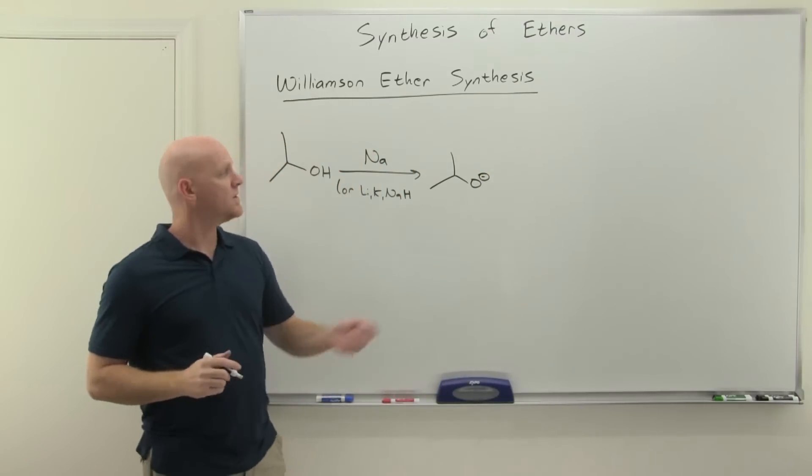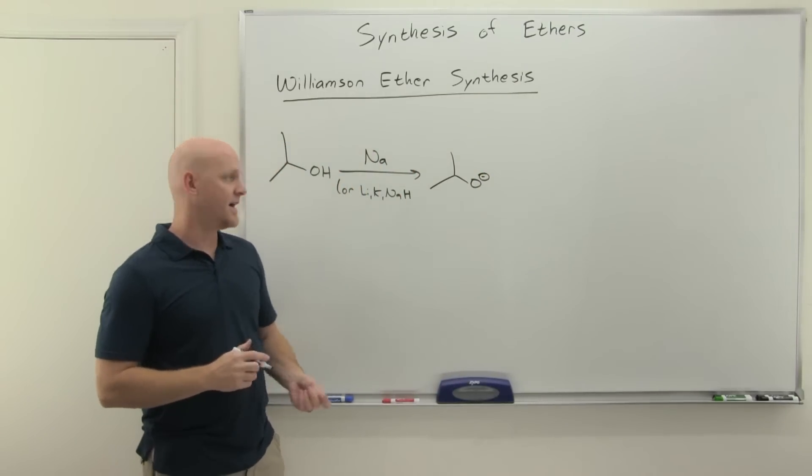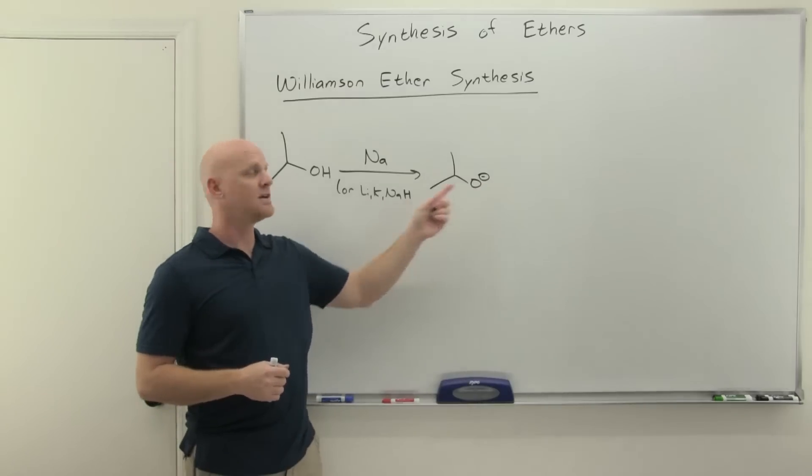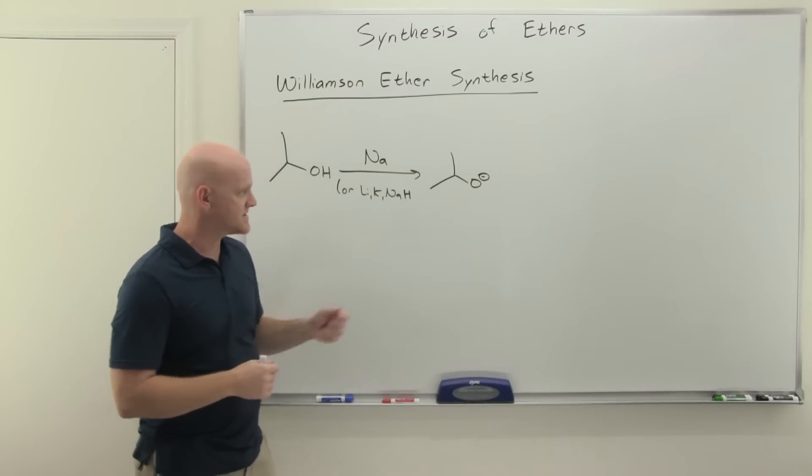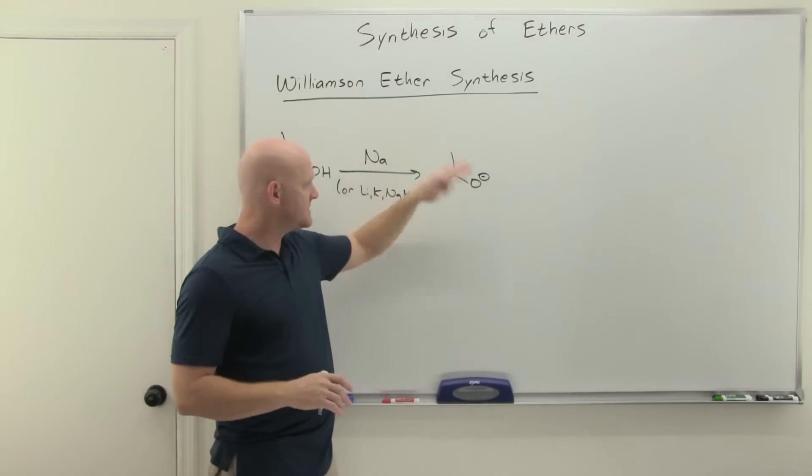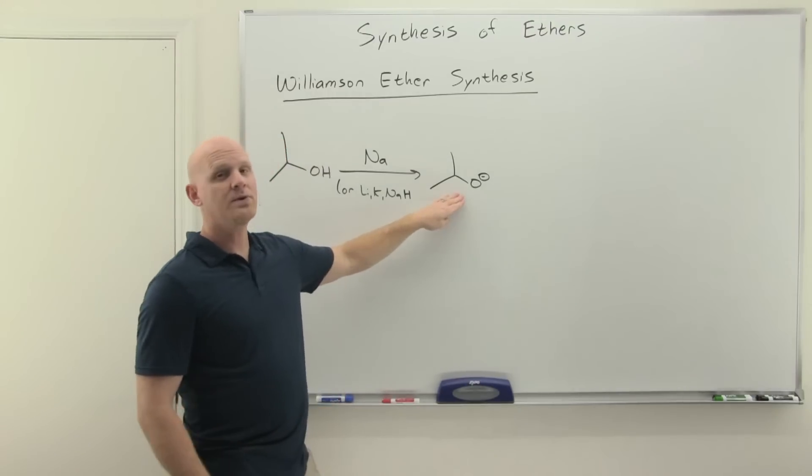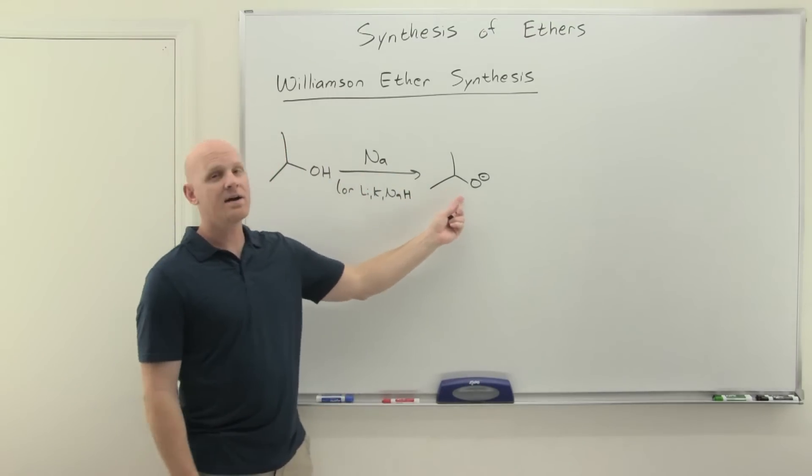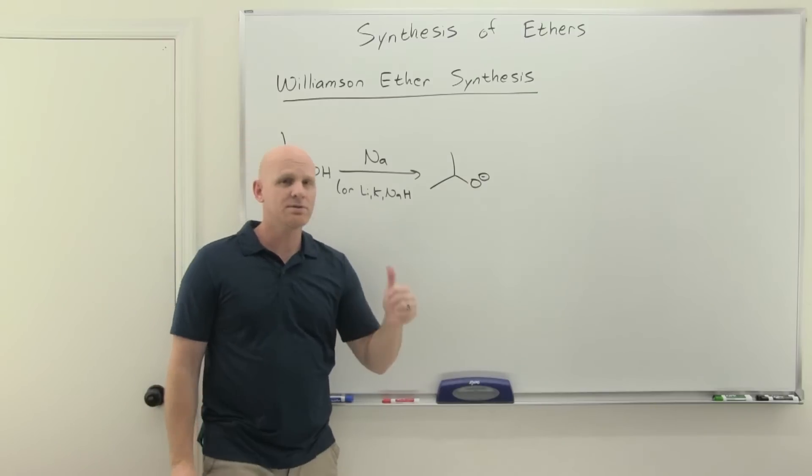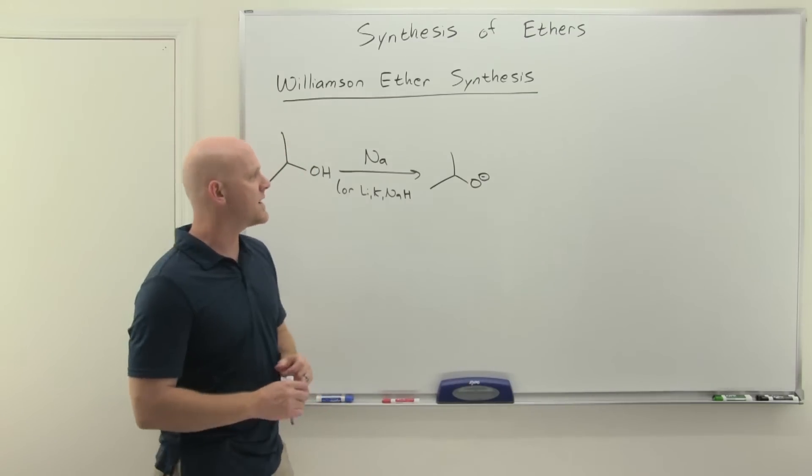So you're going to form the conjugate base here, which is an alkoxide ion, and technically you could show the Na+, so sodium gets oxidized in the process, it turns out. You could show that as well, but not a big deal here. But it's a strong nucleophile, and that was the point. An alcohol is a weak nucleophile, but this alkoxide ion, the conjugate base, is a strong nucleophile, and that's what I need for SN2, you might recall.